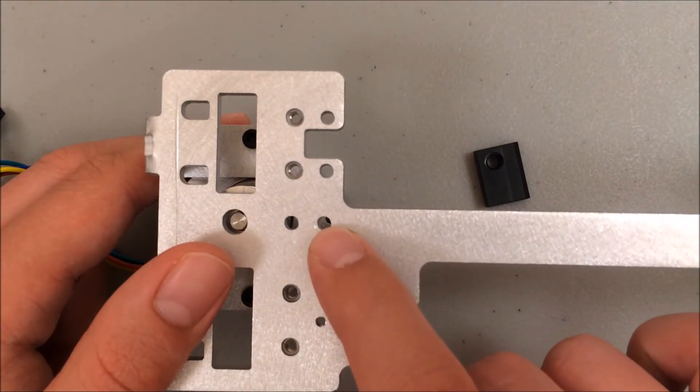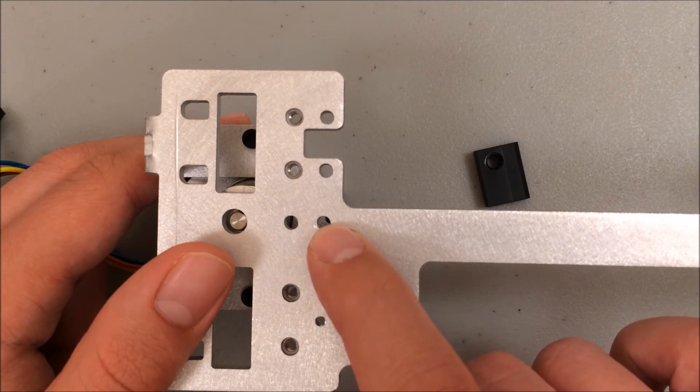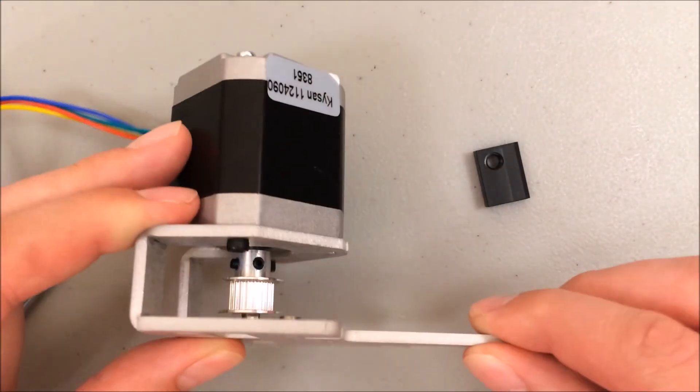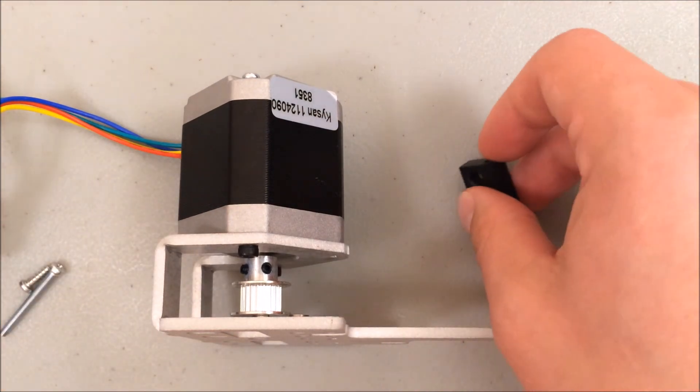I'm going to feed that 30mm screw right through here. It's going to pass all the way through to the motor and the plastite screw is just going to help secure that Delrin block in place. So let's get those installed.